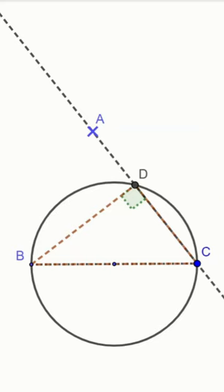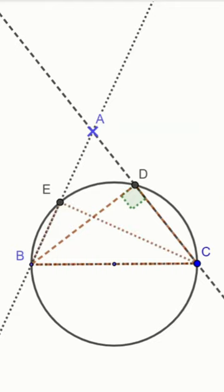We draw only with the ruler the line passing through B and A. This line intersects the circle at a point E. Therefore, the triangle BEC is right angled at E according to Thales' theorem.